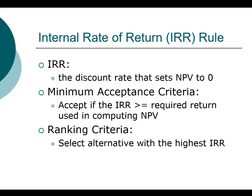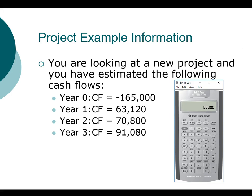We'll use the same example we've seen before — the same set of cash flows. Remember that we cannot compute the internal rate of return directly using a formula; the only way is by using a financial calculator. So first we're going to enter the cash flows. We always clear the worksheet first. With the internal rate of return, you must enter the cash flow in year zero. Our investment is $165,000, which is a negative outflow, so we make that negative and press Enter.